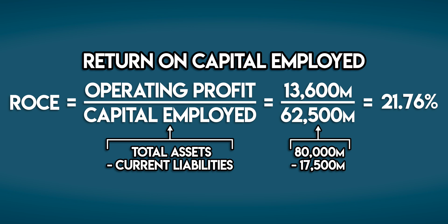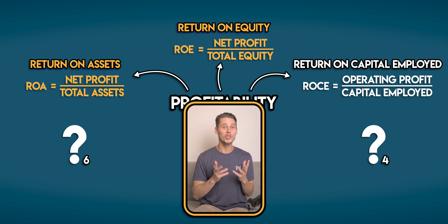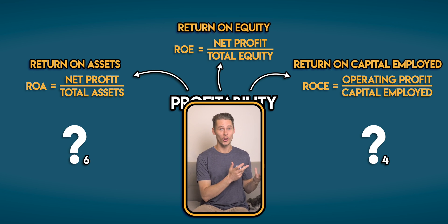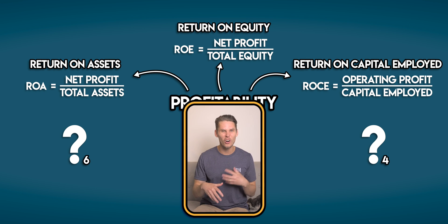A high ROCE is a good thing — it tells us that a business is using its capital efficiently to generate profit. Return on assets, return on equity, and return on capital employed are all return ratios. The next three are a little bit different.